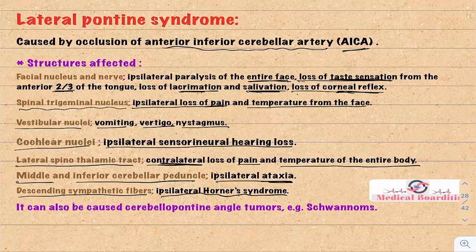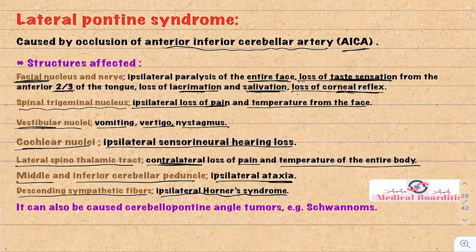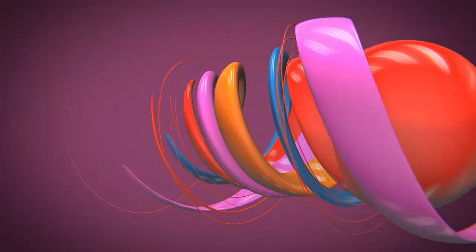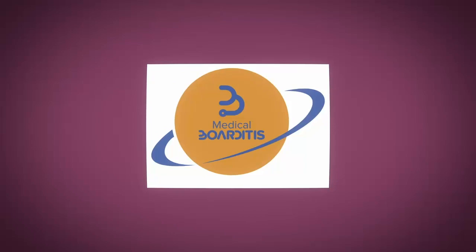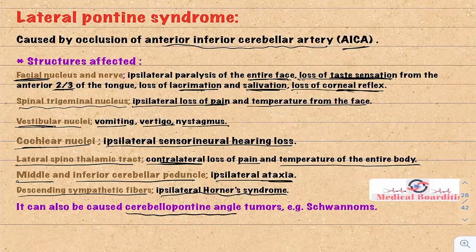A key localization tip: focus on facial nerve problems and vestibulocochlear nuclei problems, since these are located on the lateral pons. Recognizing these helps easily localize the lesion to the lateral pons. A side note: cerebellopontine angle tumors like schwannomas can also cause lateral pontine syndrome by compressing the lateral pons structures — schwannomas most commonly arise from the vestibulocochlear nerve.